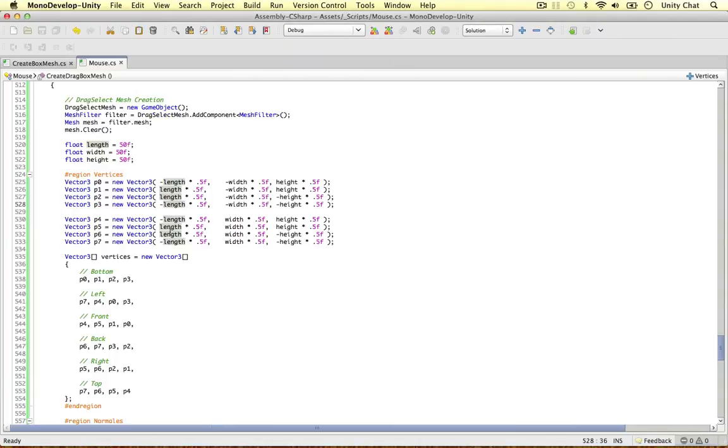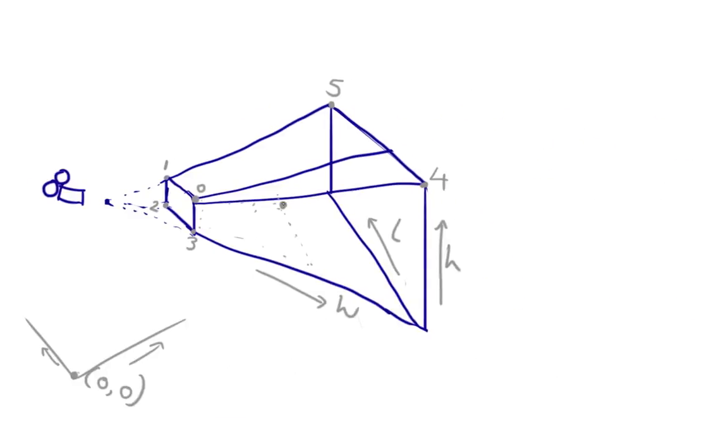Two more points to go. 0.6, positive length, positive width, negative height. So 0.6 is going to be here. And by the process of elimination, to save a few seconds, 0.7 is going to be here.